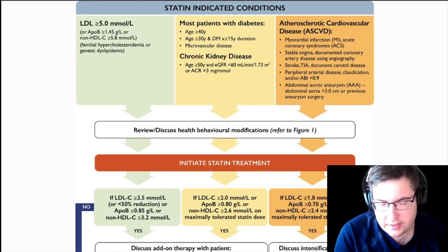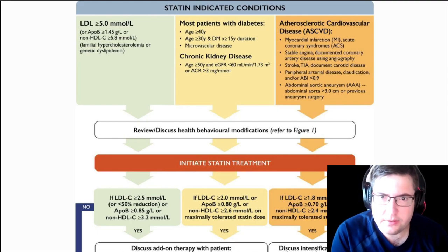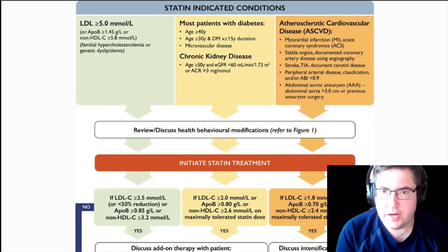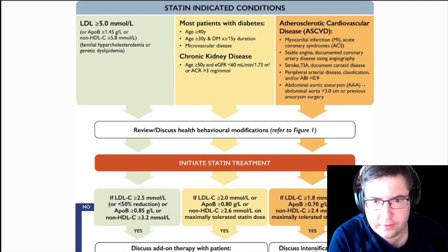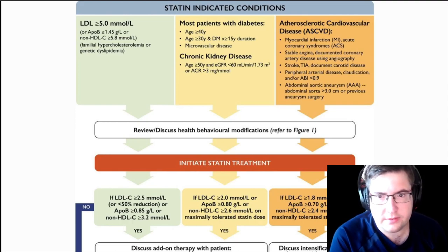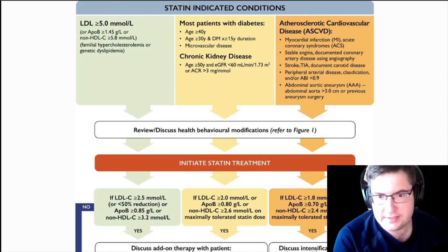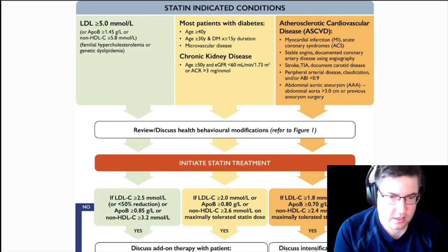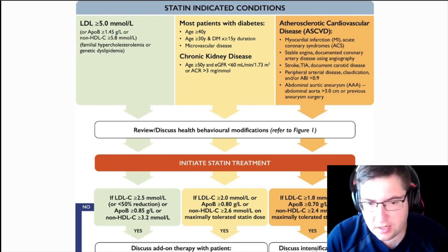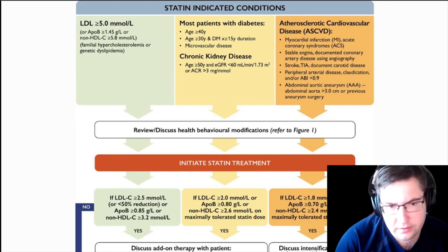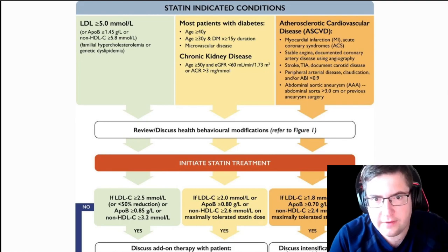If you haven't had a cardiovascular event but fit into statin-indicated conditions such as diabetes or very high LDL, statin therapy is also recommended. For diabetes, this applies if your age is over 40, or over 30 with type 2 diabetes for at least 15 years or microvascular disease. For chronic kidney disease with age over 50, GFR less than 60, or ACR over 3, statin therapy is also indicated. These scenarios remain primary prevention.